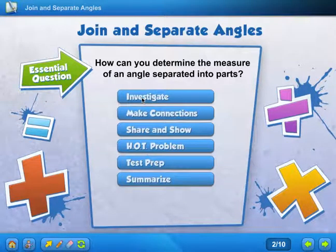Hi everyone. Today we are in lesson 11.4, and that is on page 431 in your colored math books. We are going to figure out how to join and separate angles. The question asks, how can you determine the measure of an angle separated into parts? So let's get started.